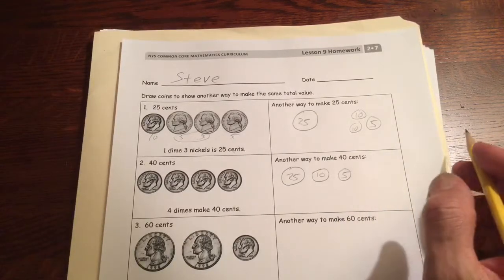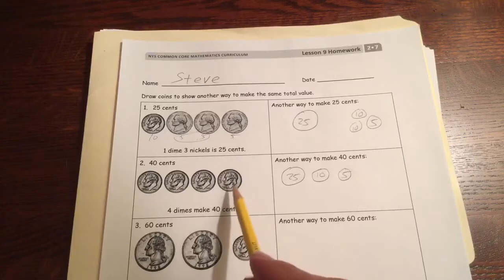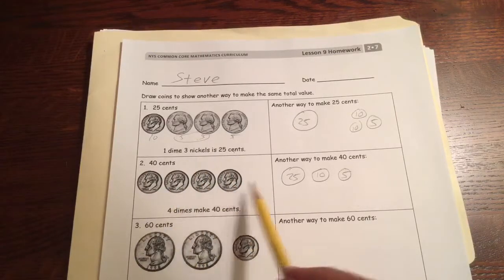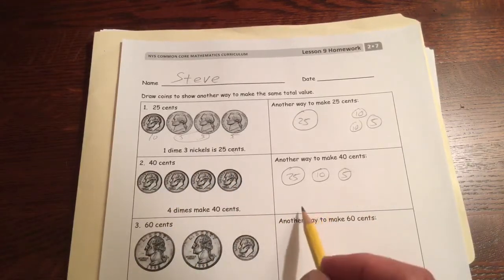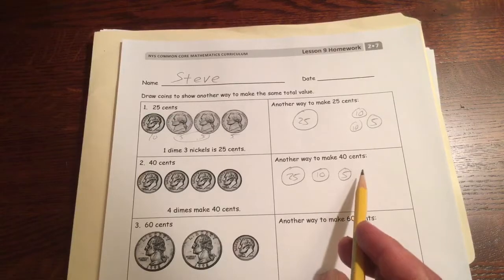There are other ways to make 40 cents. You could draw two nickels. You could have three dimes and two nickels. There's lots of different ways to make 40 cents. That's just one of the ways you can do it.